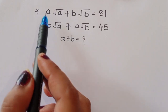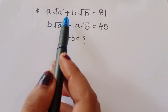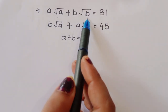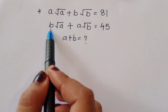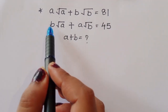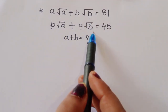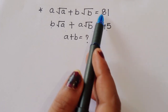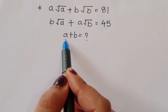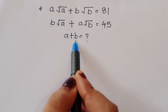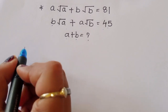The problem: given a√a + b√b = 81 and b√a + a√b = 45, these are two equations. We have to find out the value of a + b.